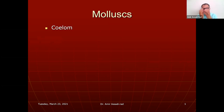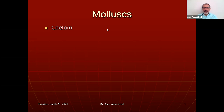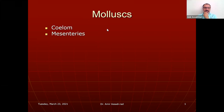Molluscs — we've been talking about them a little bit here and there from the beginning of semester. They include clams, snails, and octopus. These are coelomate animals, and they have mesenteries mainly because the mesenteries surround the coelom.